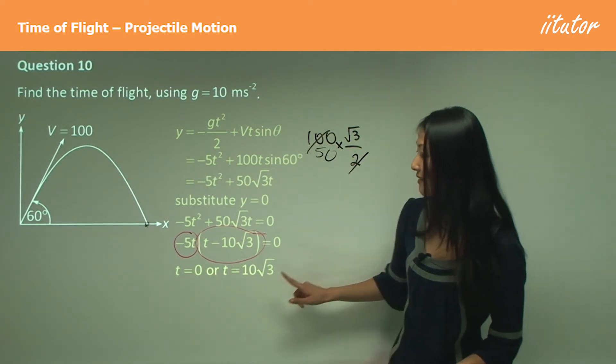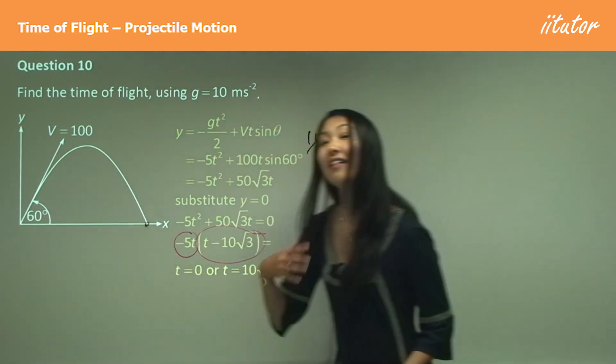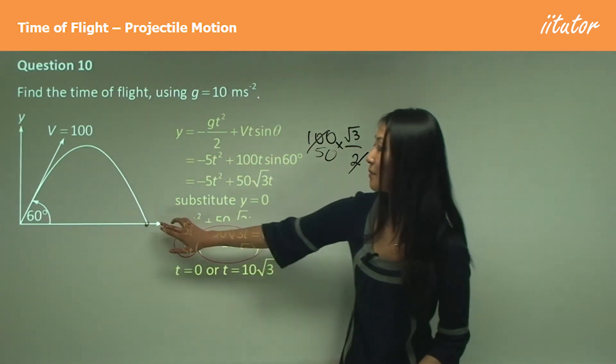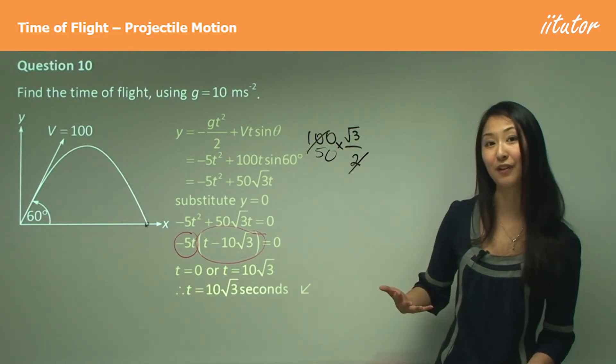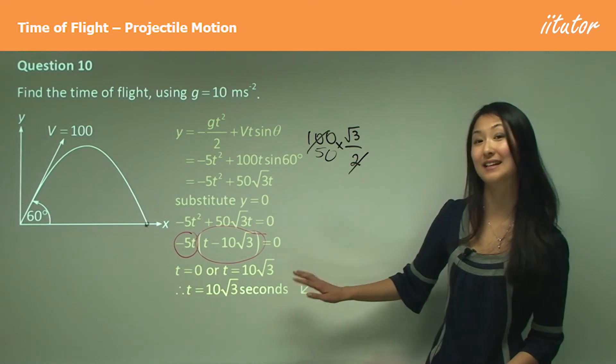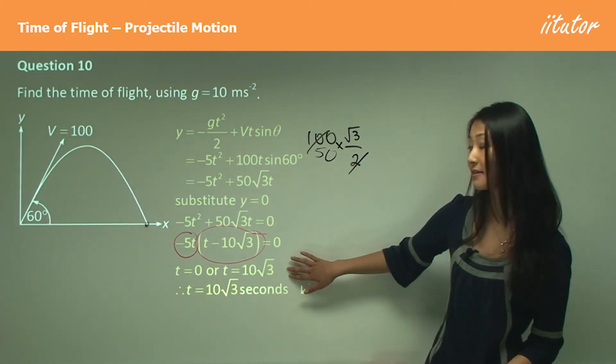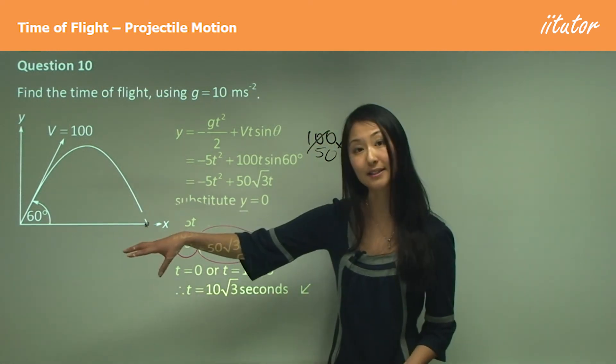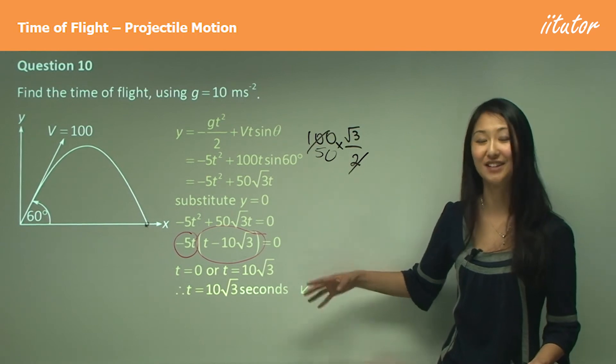Now remember how I said, since this represents the initial starting value, that means this must represent that last value, so this must be the time of flight. So our time of flight in this case is 10√3 seconds. Just remember, you're always going to get two values for this, but the first value will be where it's starting off, the second value where it's ending, so that represents the time of flight.